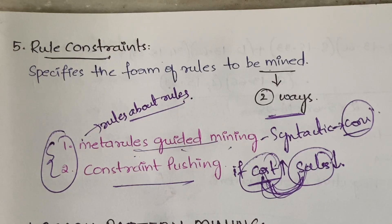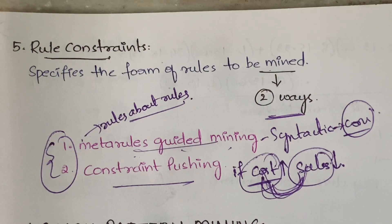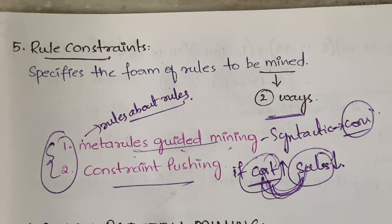All you need to remember is what a constraint is and the five types: knowledge, data, dimension, interestingness, and rule. That's all for this video. I hope you understood. In the next video I'll be explaining about graph pattern mining. Thanks for watching. If you still have any doubts, let me know in the comment section — I'll definitely try to clear all your doubts.